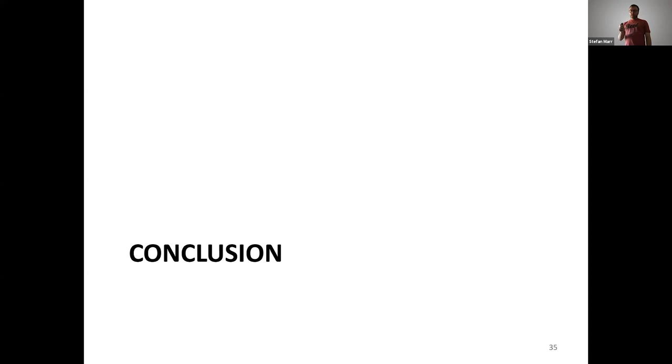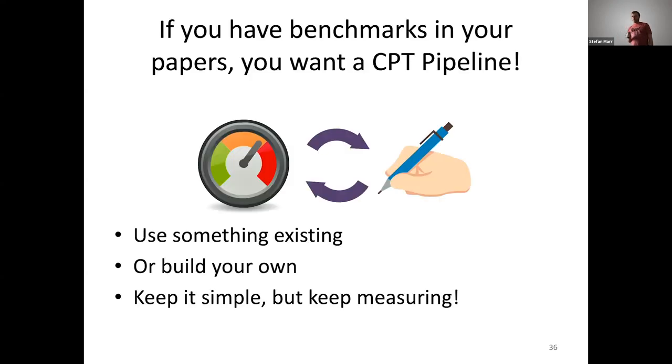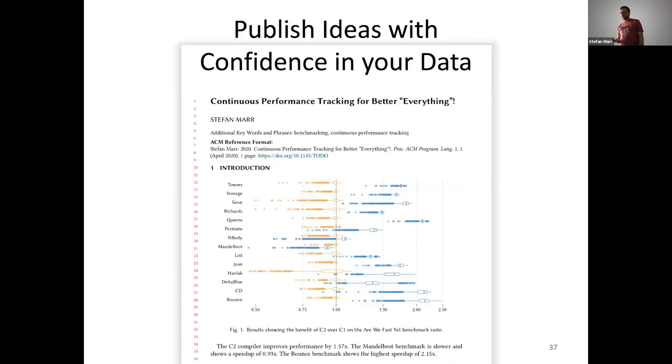Okay, let me conclude. So, I would argue that if you have a paper that uses something like performance as a volatile metric, you really want a continuous performance tracking pipeline. If you change anything, you need to rerun your benchmarks, and you have to rerun the different steps of getting from the raw data to the insights for your paper. So, as I use something existing, there are a couple of tools out there from the various big language implementation systems. Everyone has their own system, essentially, or build your own. My recommendation would be keep it simple, but keep measuring. And then, hopefully, you can publish your ideas with confidence and report your data correctly.